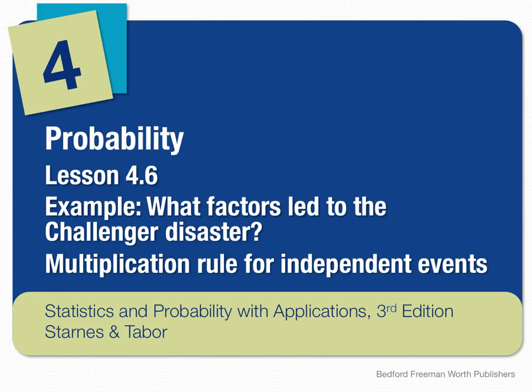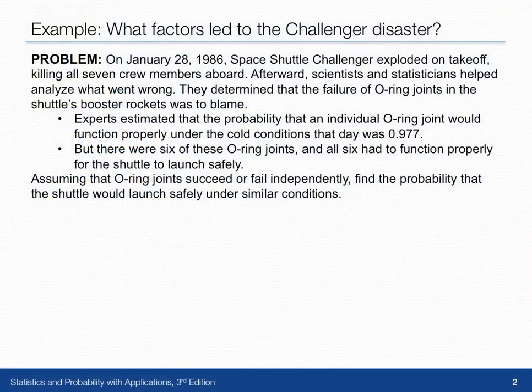In the Lesson 4.6 example, 'What Factors Led to the Challenger Disaster,' we'll review the Multiplication Rule for Independent Events. On January 28, 1986, Space Shuttle Challenger exploded on takeoff, killing all seven crew members aboard. Afterward, scientists and statisticians helped analyze what went wrong. They determined that the failure of O-ring joints in the shuttle's booster rockets was to blame.